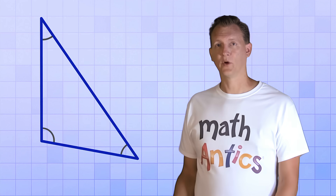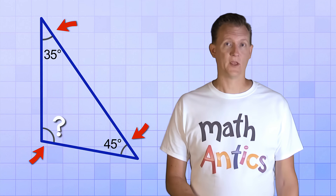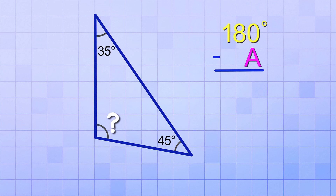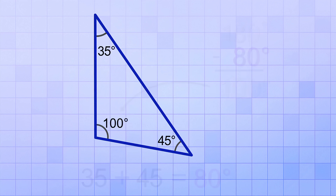Knowing that a triangle's angles always add up to 180 degrees can really help when solving geometry problems. There are situations where you know two of the angles but need to figure out the third. For example, if one angle is 35 degrees and another is 45 degrees, but the third is unknown, since the total must be 180 degrees, we add the known angles: 35 plus 45 equals 80 degrees. Then we subtract 80 from 180 to get 100 degrees — that's the unknown angle. You can always check by adding all three angles to confirm you get 180.